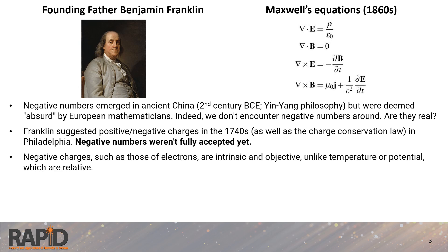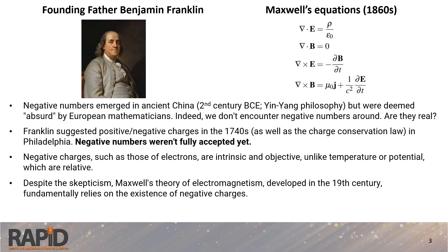Despite initial doubts, Maxwell's theory of electromagnetism developed in the 19th century fundamentally depends and relies on the existence of negative charges. So by the time of Maxwell it was clear, if you questioned the reality of negative numbers, you would struggle to develop a coherent theory of electromagnetism without them.